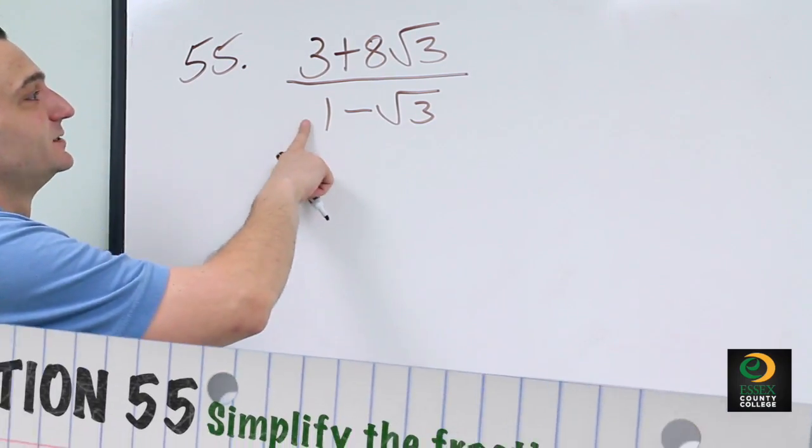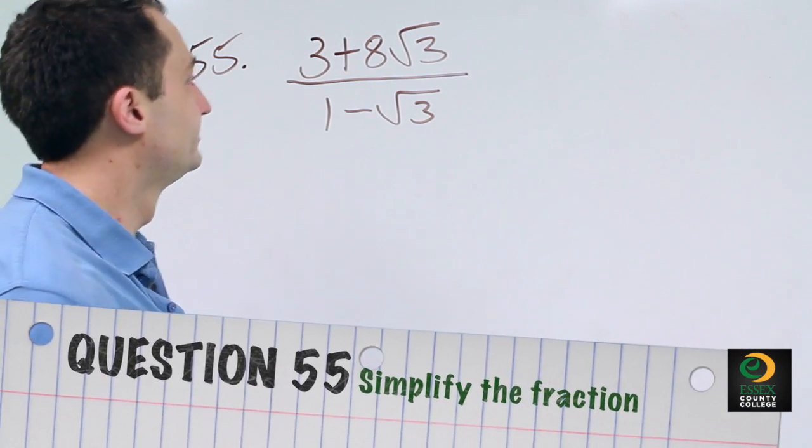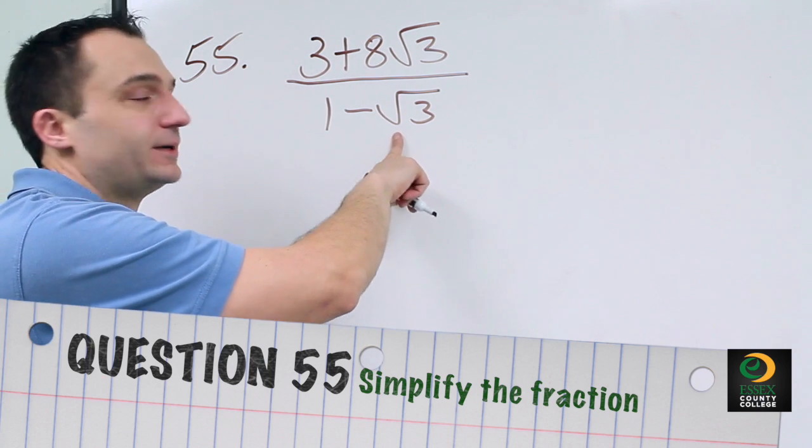Problem 55 asks us to simplify this fraction. The same rule applies: you cannot leave a square root in the bottom of the fraction.